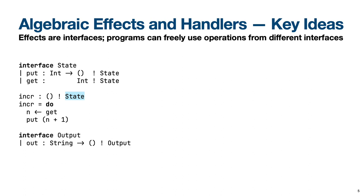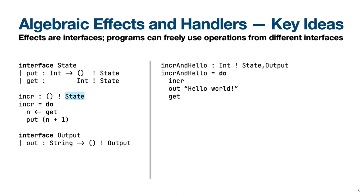The program uses the get and put operations from the state effect interface to increment the state by one. We can freely call this program in any context that has at least the state effect. For example, say we declare another interface for an output effect with a single operation for outputting a string. Using this interface, we can write a new program whose type indicates it has both the state effect and the output effect, and we can seamlessly call our previous increment program from it. This illustrates how programs can freely and easily use and combine different effects by modeling effects as interfaces at the type level.